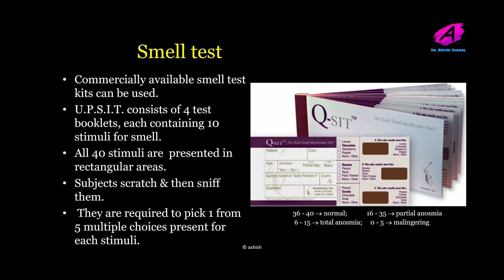Commercially available smell test kits can also be used. The most acceptable one is the University of Pennsylvania Smell Identification Test kit. It consists of four test booklets, each containing 10 stimuli for smell. All 40 stimuli are presented in rectangular areas; subjects scratch and sniff them and pick from one to five multiple choices per stimulus. We grade according to the number the patient gets right: 36 to 40 is normal, and 0 to 5 indicates malingering, anosmia, or partial anosmia.